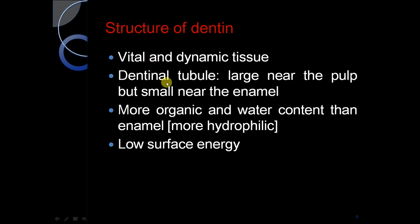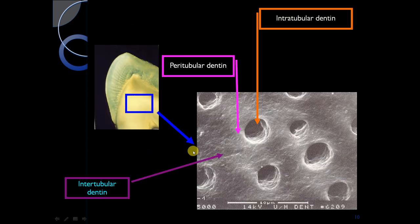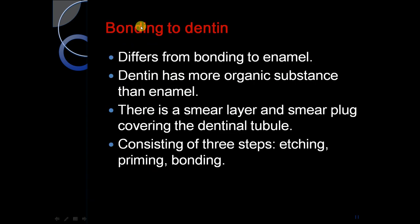Dentine is a vital and dynamic tissue. Dentinal tubules are large near the pulp but small near the enamel. Dentine has more organic and water content than enamel and is more hydrophilic. Dentine has low surface energy. There is intratubular dentine, peritubular dentine, and intertubular dentine. Bonding to dentine differs from bonding to enamel; dentine has more organic substance, and there is a smear layer and smear plug covering the dentinal tubules.